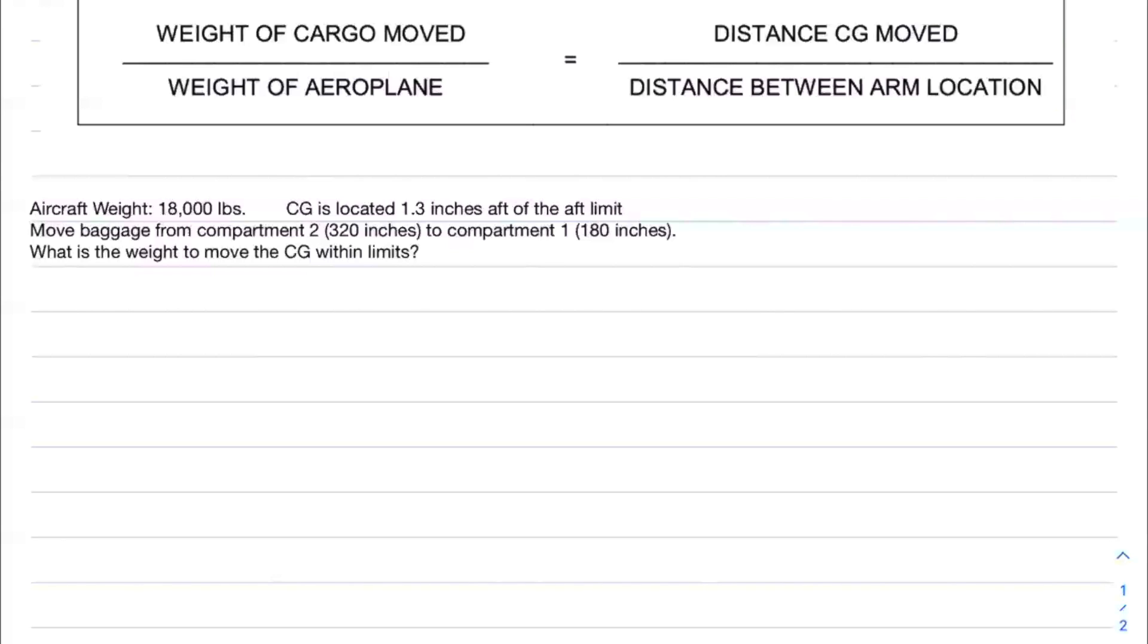For example, if you know the weight of the aircraft, the distance the CG has to move, and the distance between the two arm locations you're going to move, you can solve for X. That's what we'll do today. Let's take a look at this example.